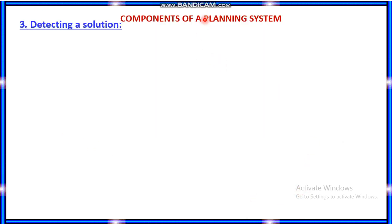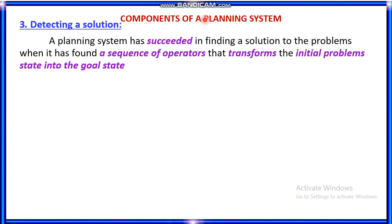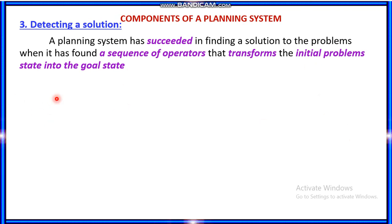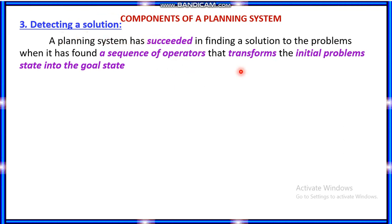The third component is deducting a solution. A planning system has succeeded in finding a solution when it finds a sequence of operators that transforms the initial problem state into the goal state. If it can transform from the initial state to the goal state with a sequence of operators, then we can say the planning system has succeeded.